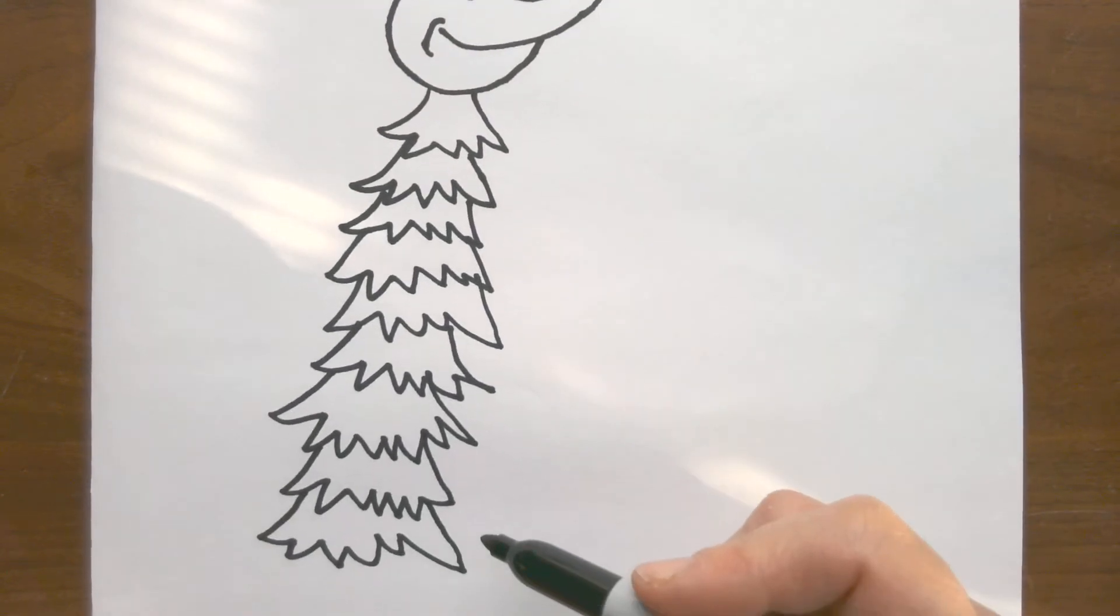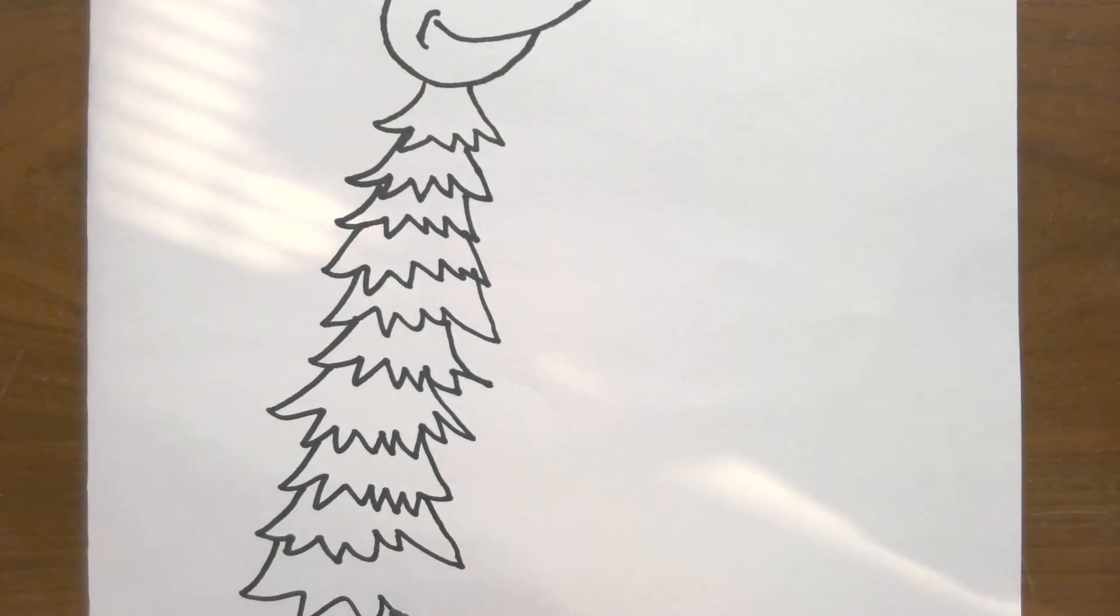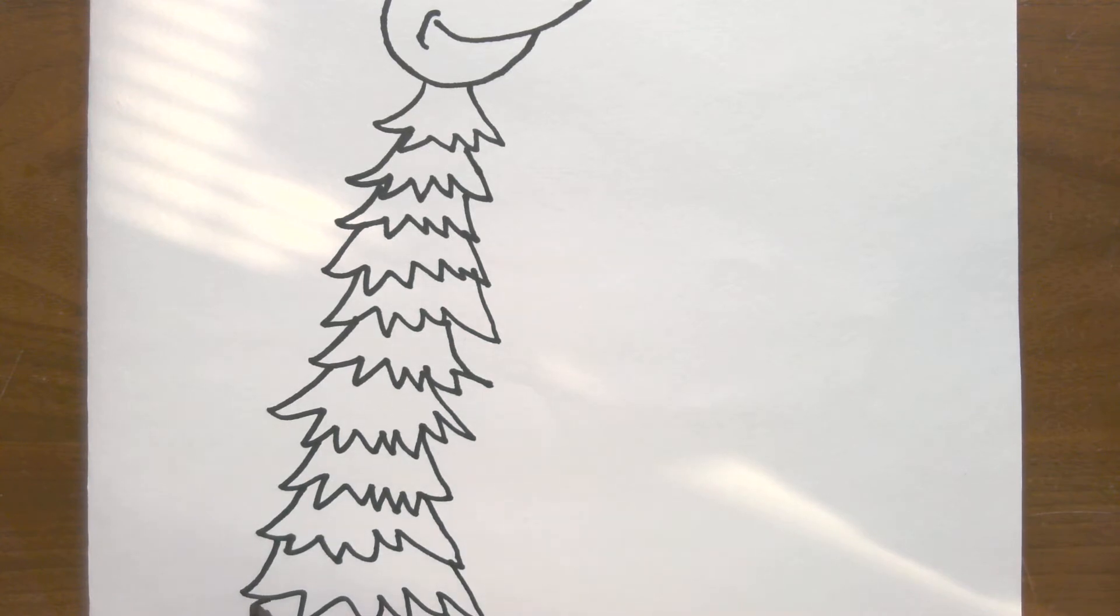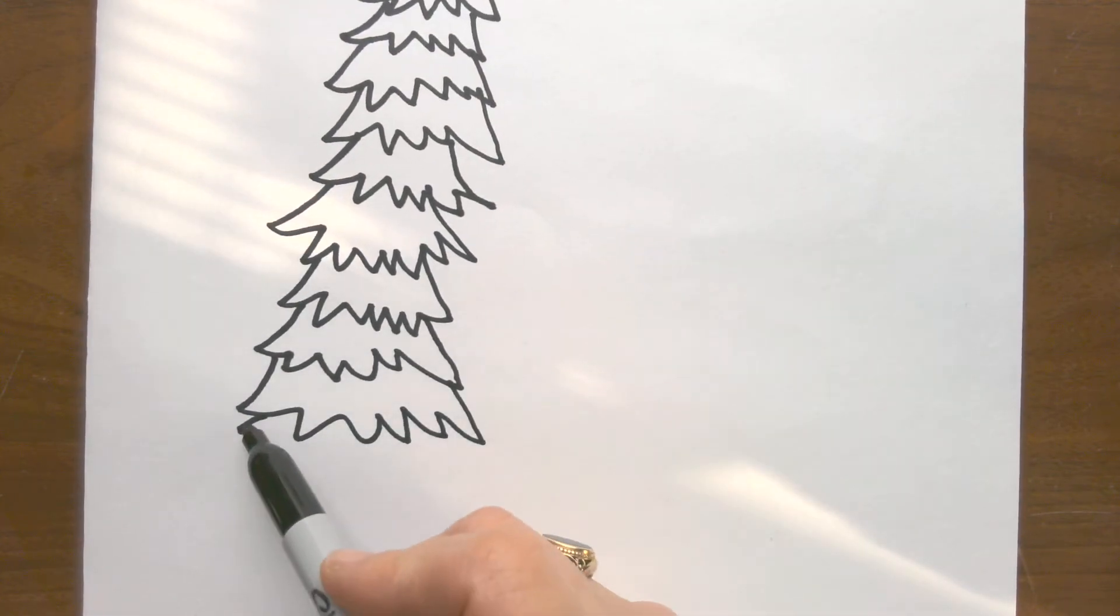I'm still going down on my paper, and we're going to do one last row. I'm just doing a circle at the end for a stomach.